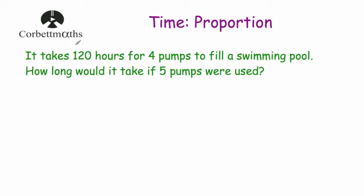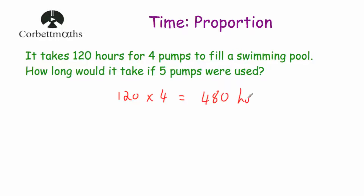If we know that it takes 120 hours for 4 pumps to fill the pool, it'll take 4 times longer for 1 pump to fill the pool. So if we take 120 and multiply it by 4, that'll tell us how long it'll take for 1 pump to fill the swimming pool. So 120 multiplied by 4 is equal to 480 hours for 1 pump.